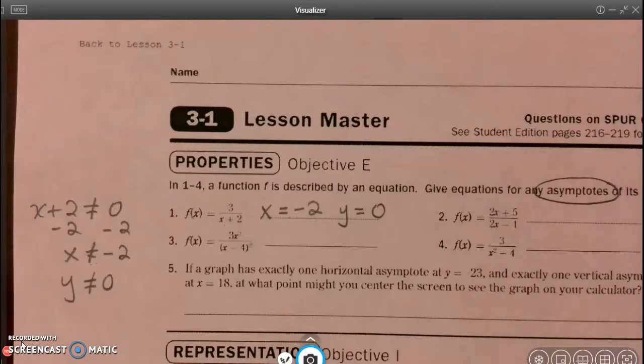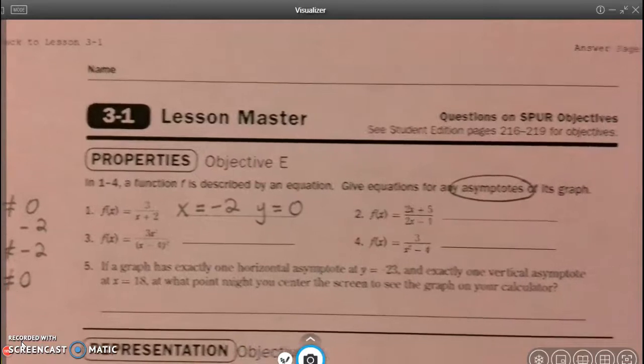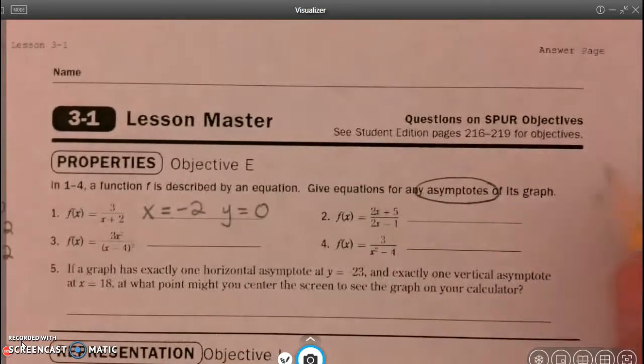All right, let's look at number 2. And number 2, our denominator is 2x minus 1, and so that cannot equal zero. Well, let's go ahead and solve for x. Therefore, x cannot equal a half.